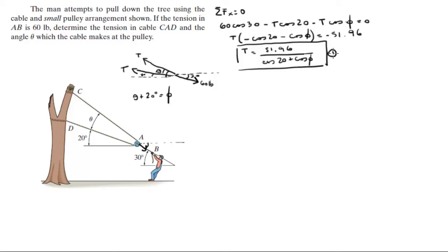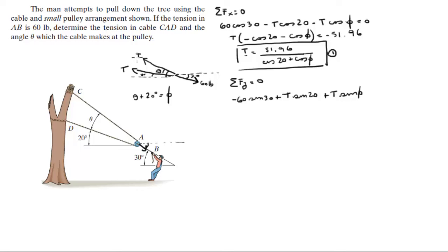We have two unknowns, T and phi, so we need another equation. The sum of forces in Y equals zero: negative 60 sine of 30 plus tension sine of 20 plus tension sine of phi equals zero. Solving for T gives T equals 30 divided by (sine of 20 plus sine of phi). This is our second equation.